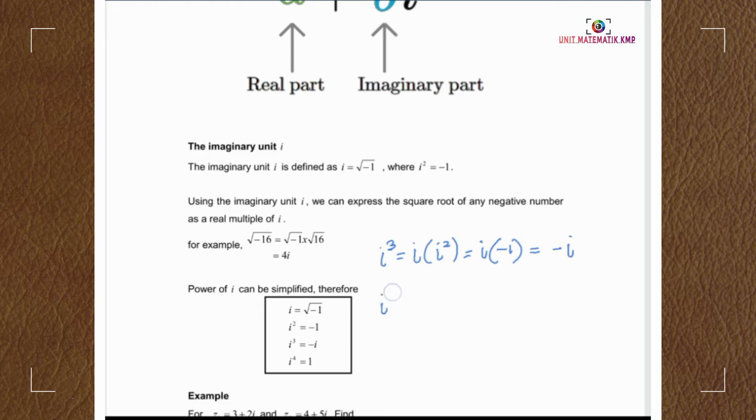Same goes to i power of 4. I can write as i squared times i squared. Negative 1 times negative 1, so we have 1.